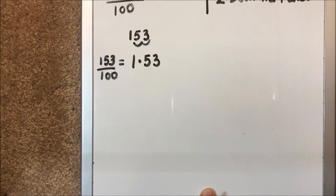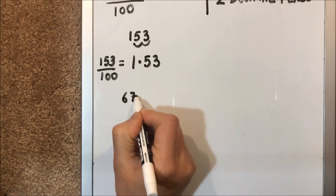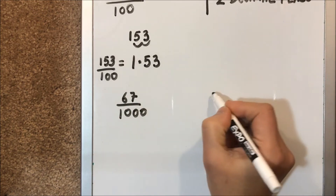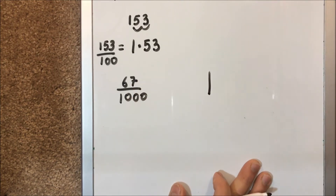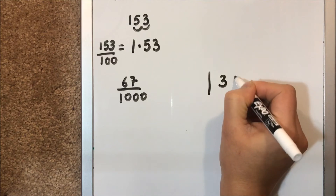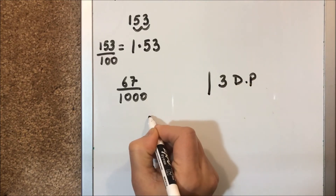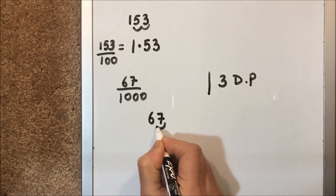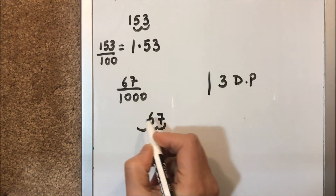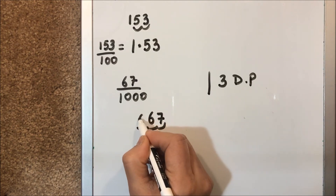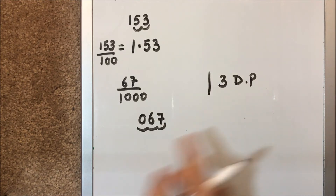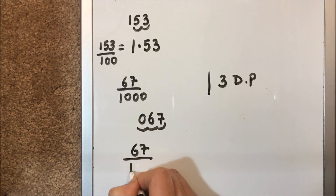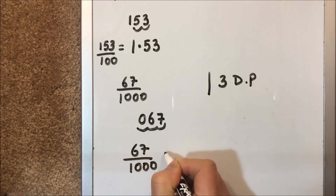Let's have another example: 67 over 1000. Following the same steps, the number of decimal places is three, because there are three zeros in the denominator. We write only the numerator and move three places to the left: 1, 2, and 3. As we can see, there is no number in one of those places, so we put a zero there. So 67 over 1000 equals 0.067.